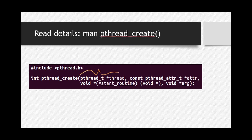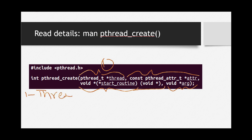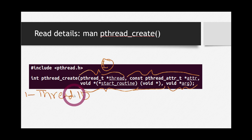These are the four parameters of this function. The first parameter is the thread ID. This is a pointer, and whenever you see a pointer, it means we are dealing with addresses. So this first parameter is the address of the thread ID.